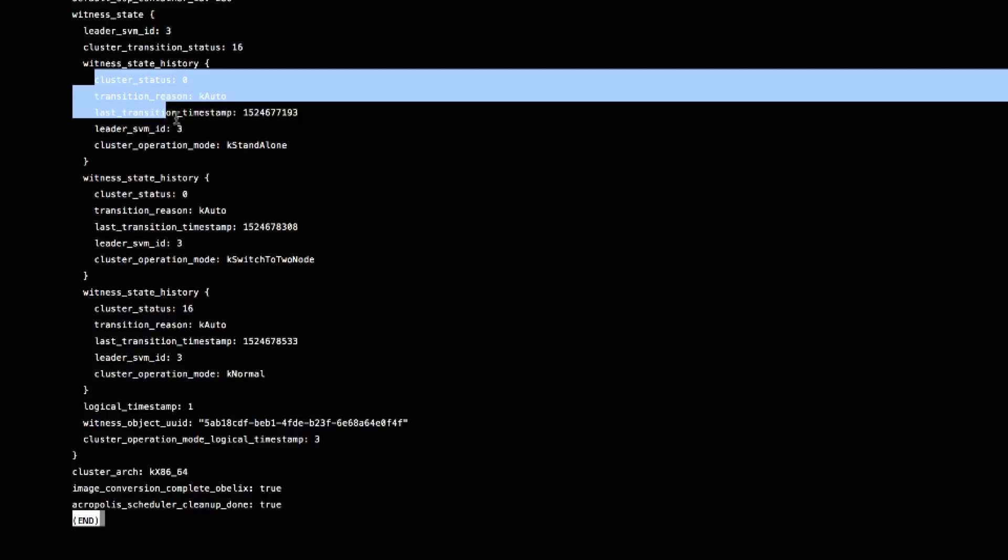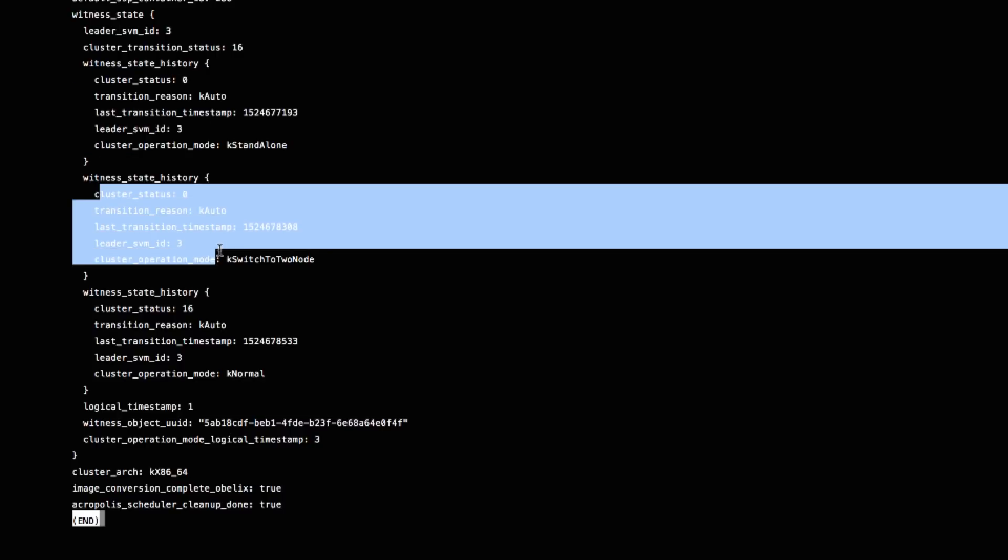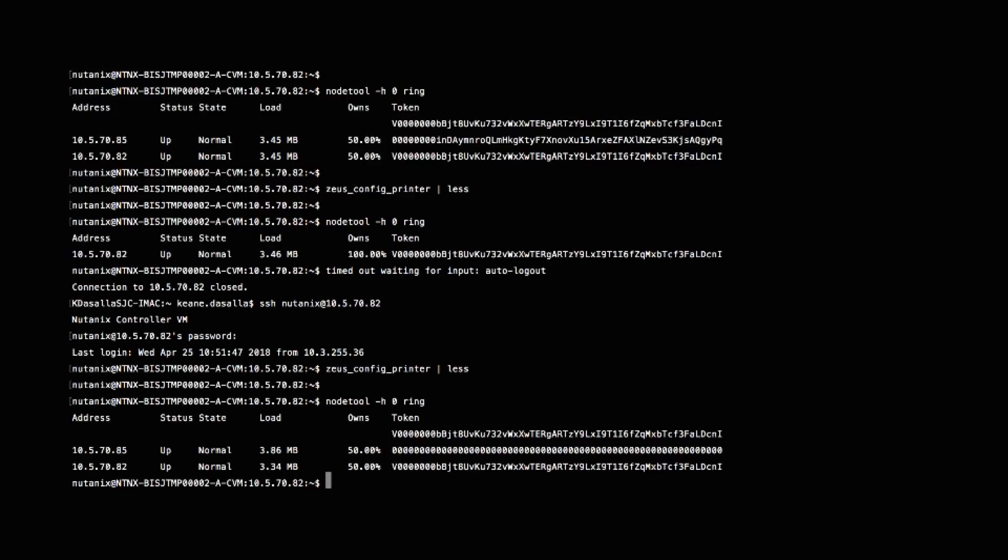This was what we saw before when it transitioned to the standalone mode. And now you can see that it has switched back to the two node state and back to a normal state here. You can see that node B has been added back to the ring and the metadata is equally distributed between both nodes.